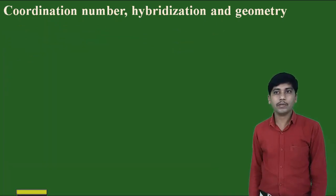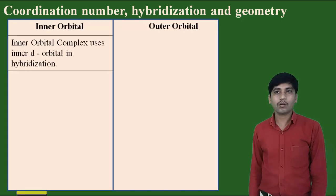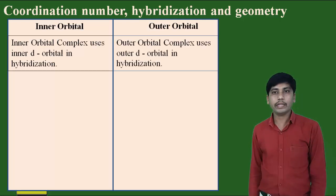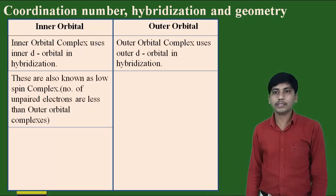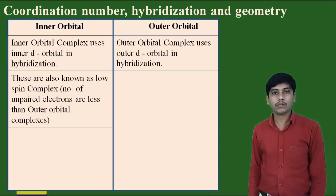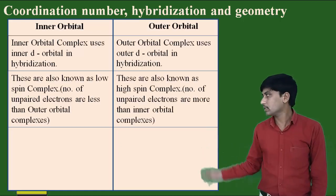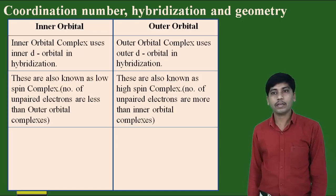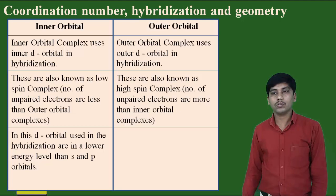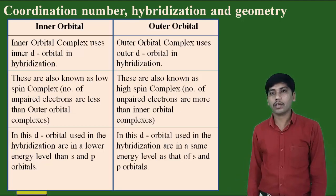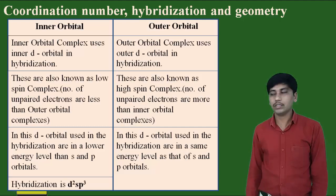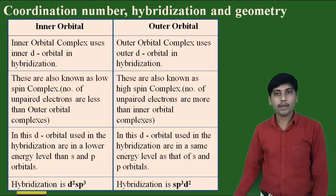The key differences between inner and outer orbital complexes: Inner orbital complexes use inner d orbitals in hybridization, while outer orbital complexes use outer d orbitals. Inner orbital complexes are also called low-spin complexes with fewer unpaired electrons compared to outer orbital complexes, which are high-spin. In inner orbital complexes, the d orbitals used are of lower energy than the s and p orbitals, while in outer orbital complexes the orbitals are at the same energy level. The hybridizations are d2sp3 vs sp3d2 respectively.